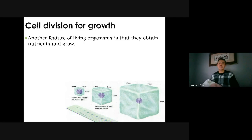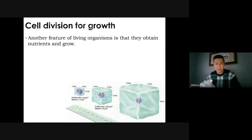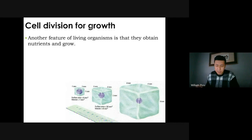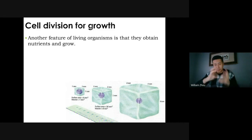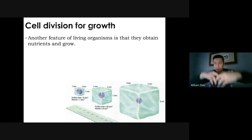Another reason for cell division is to grow. As you grow and get bigger, it can become disadvantageous — if you're too big, it will be very difficult to get nutrients to all of your body mass. A cell gets nutrients from its cell membrane — its surface. If you have a small volume, you have a relatively large surface for nutrients to enter.